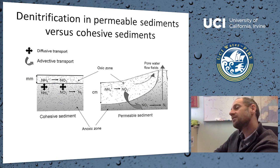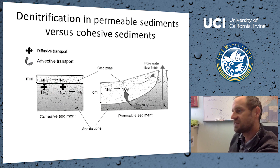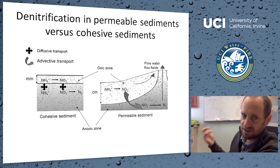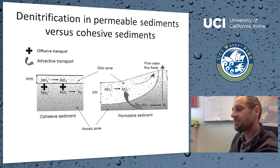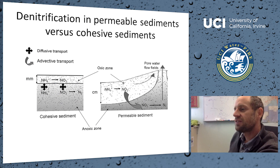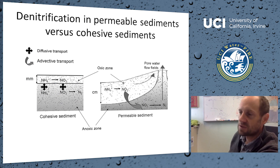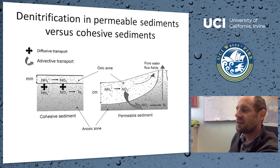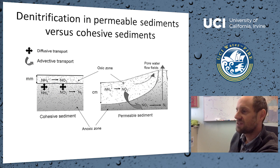One of the key questions we've been working on — which Adam has really progressed over the last four years — is how nitrogen cycles in permeable sediments compared to cohesive sediments. In a cohesive sediment, ammonium diffuses up from the anoxic zone into the oxic layer where nitrification occurs; the nitrate then diffuses back down into the anoxic zone where it's denitrified.